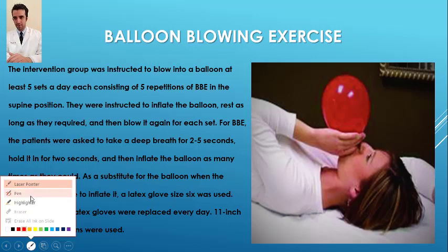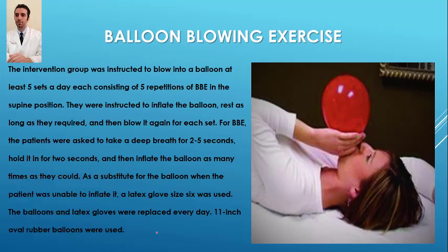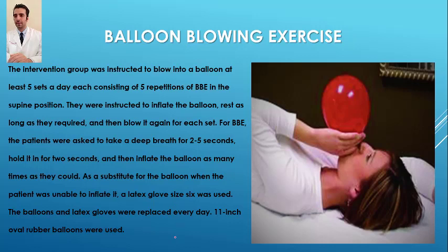For BBE, the patients were asked to take a deep breath for two to five seconds, hold it for two seconds, and then inflate the balloon as many times as they could. As a substitute when the patient was unable to inflate a balloon, a latex glove size 6 was used. The balloon and latex glove were replaced every day, and 11-inch oval rubber balloons were used.